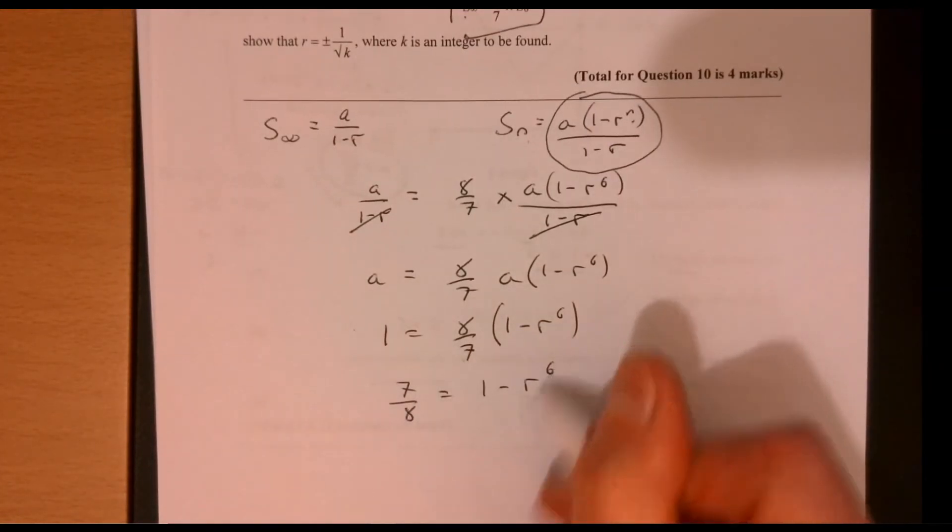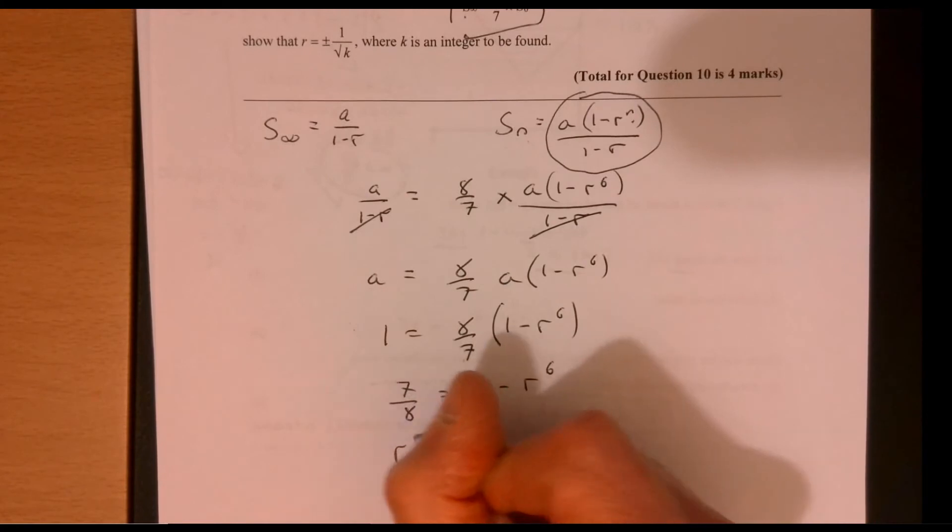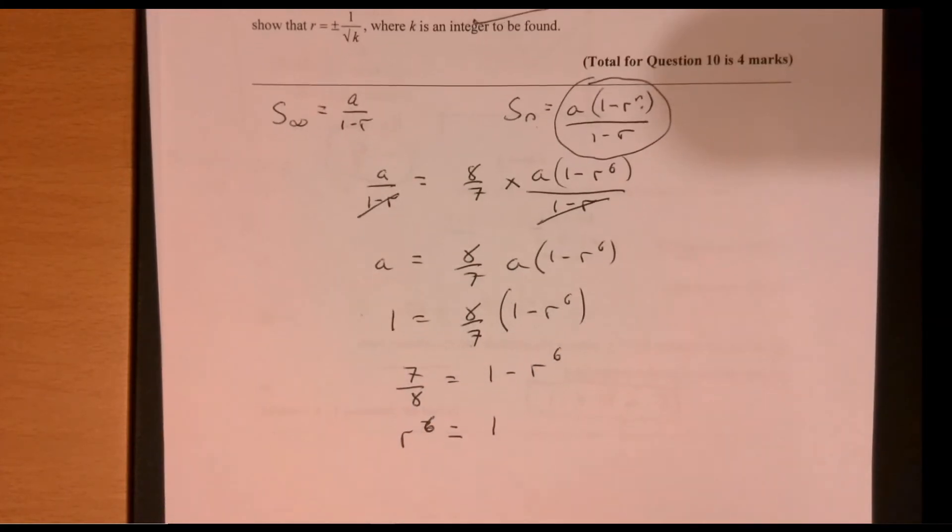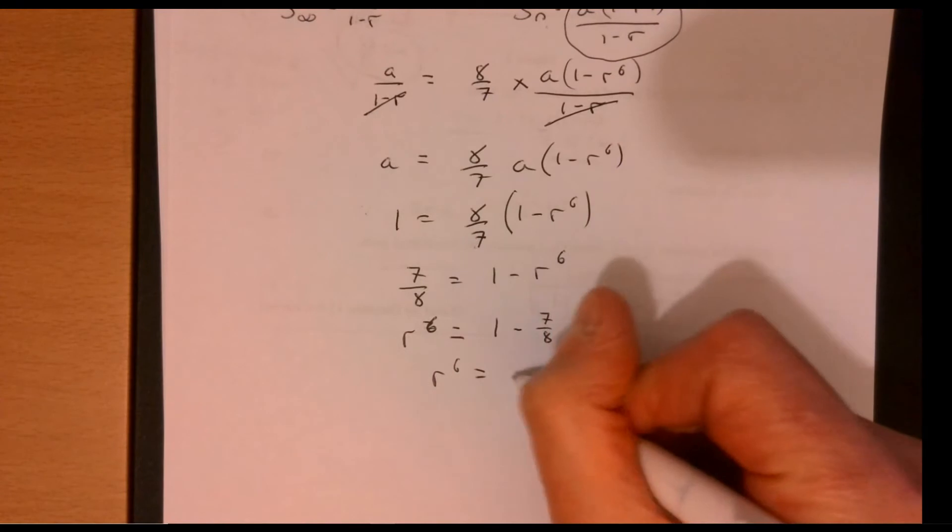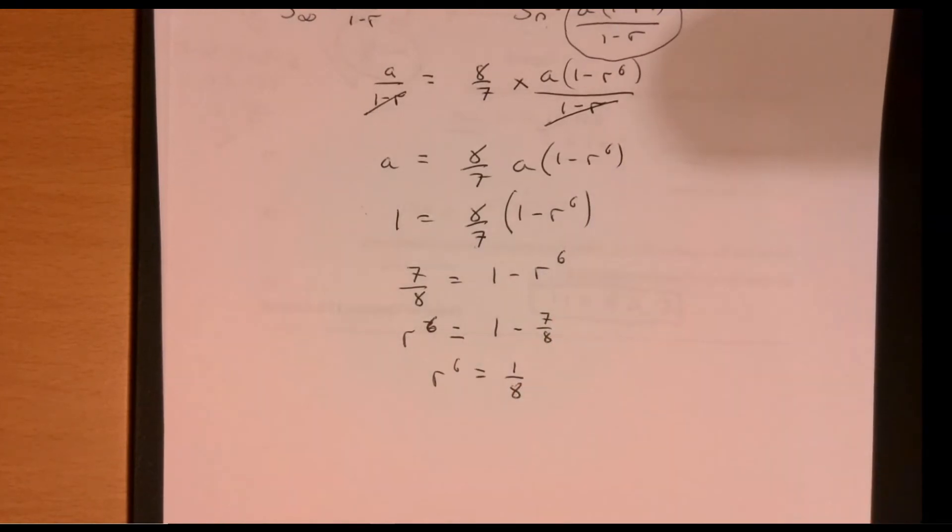Add R to the power of 6 to both sides. And take away the 7 over 8. So that gives me R to the 6 equals 1 over 8.